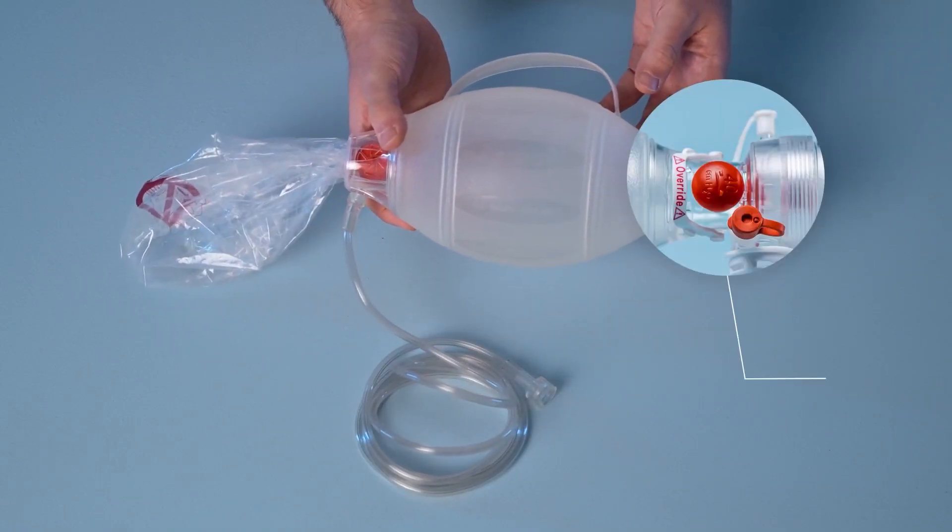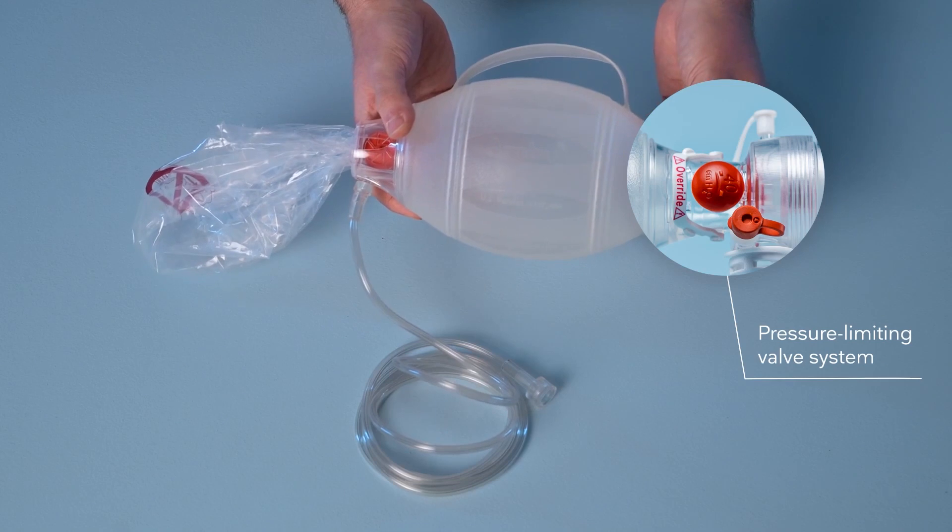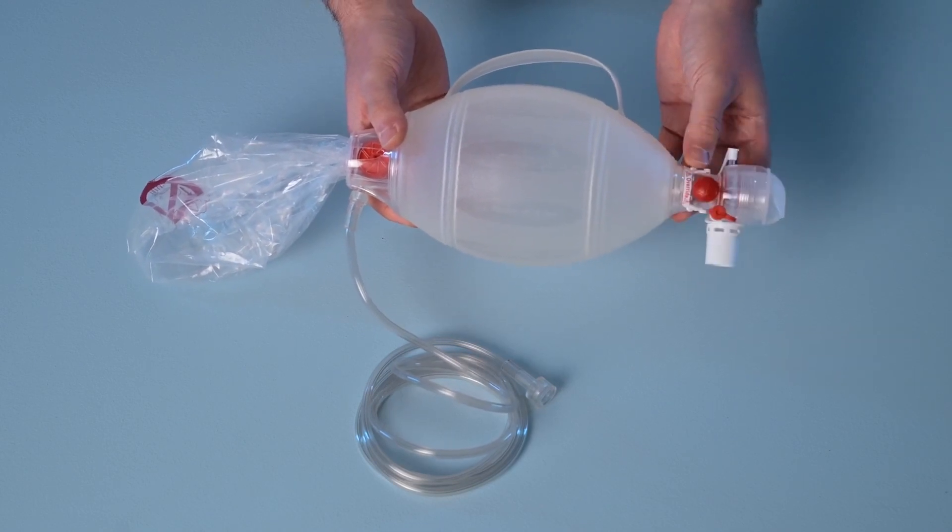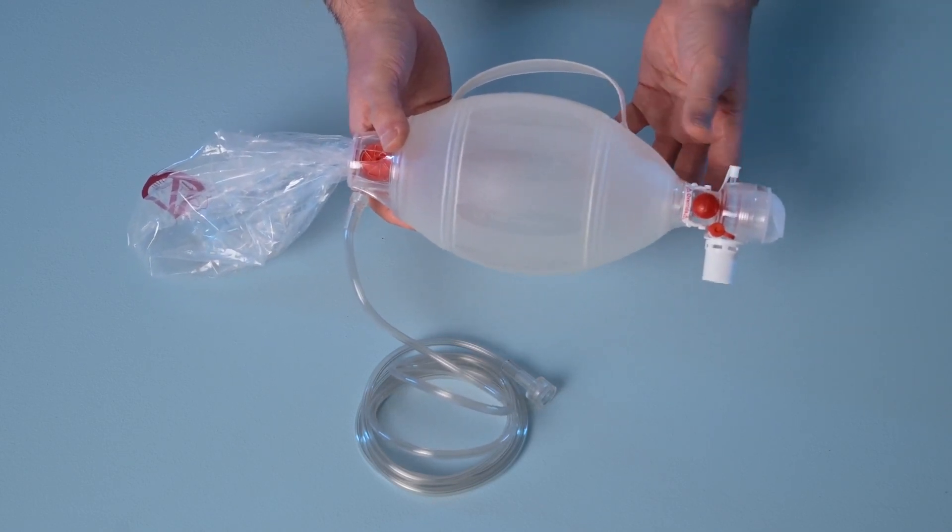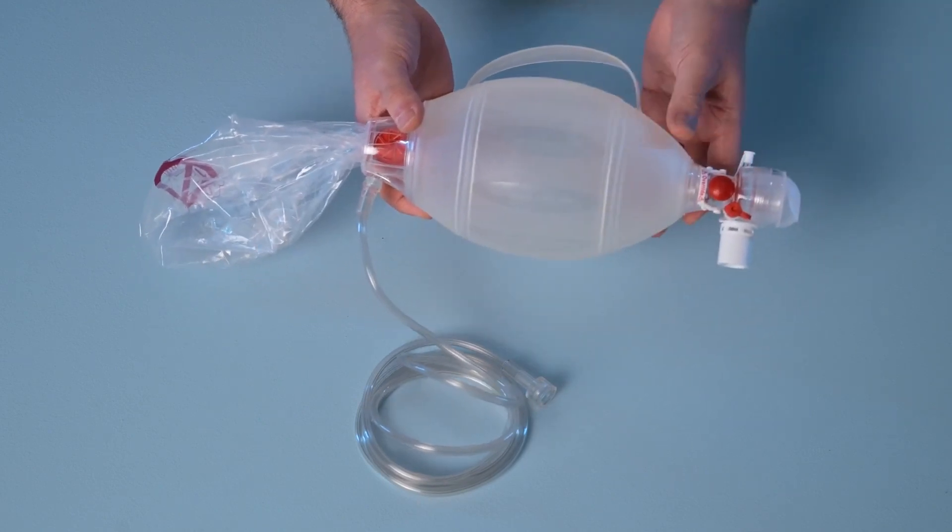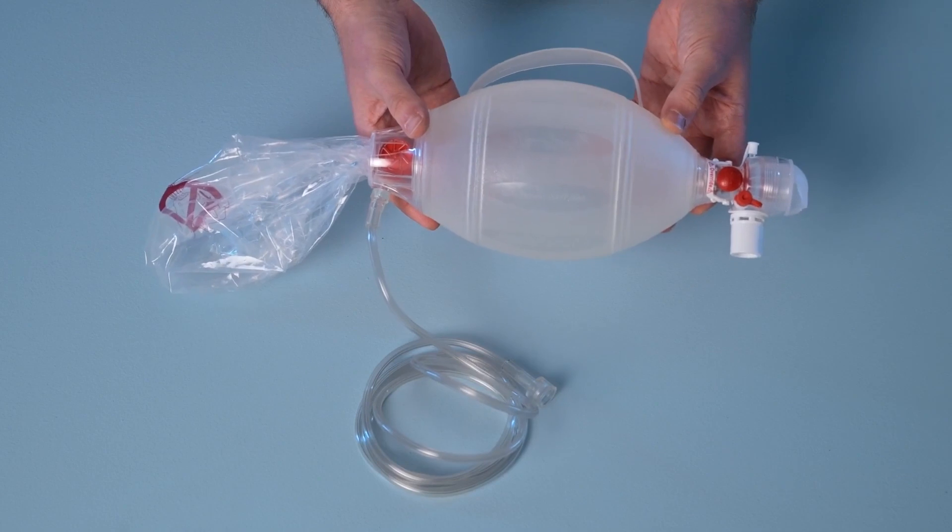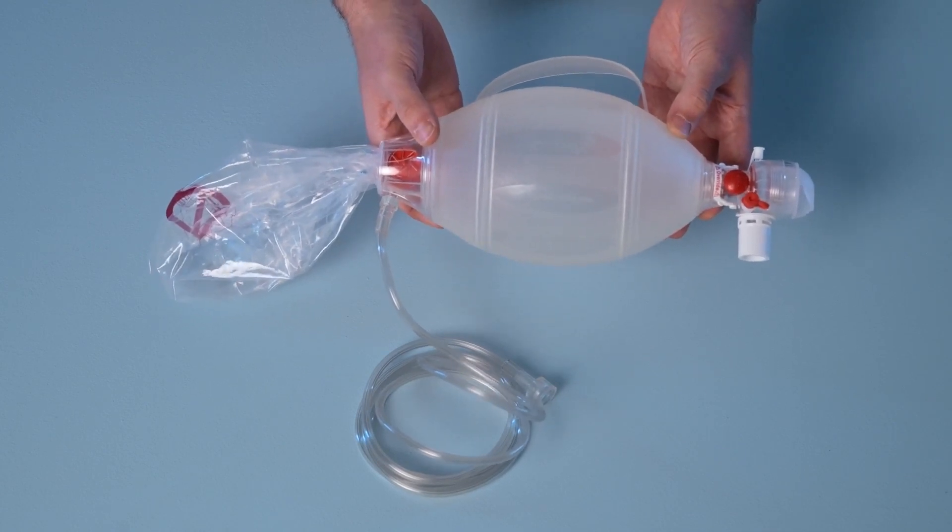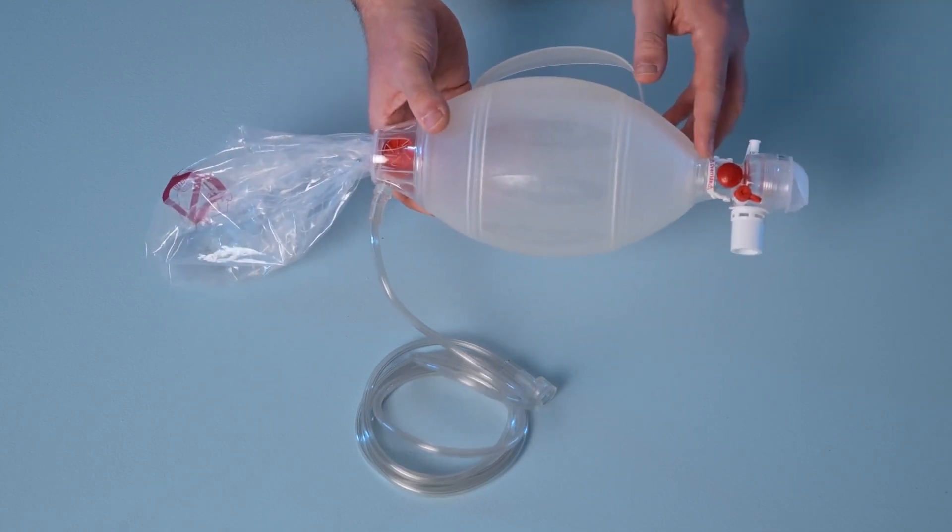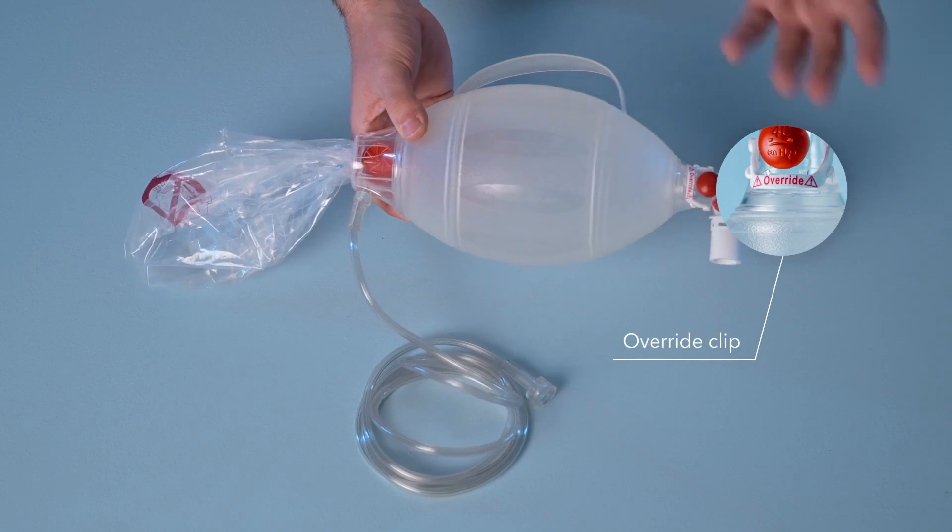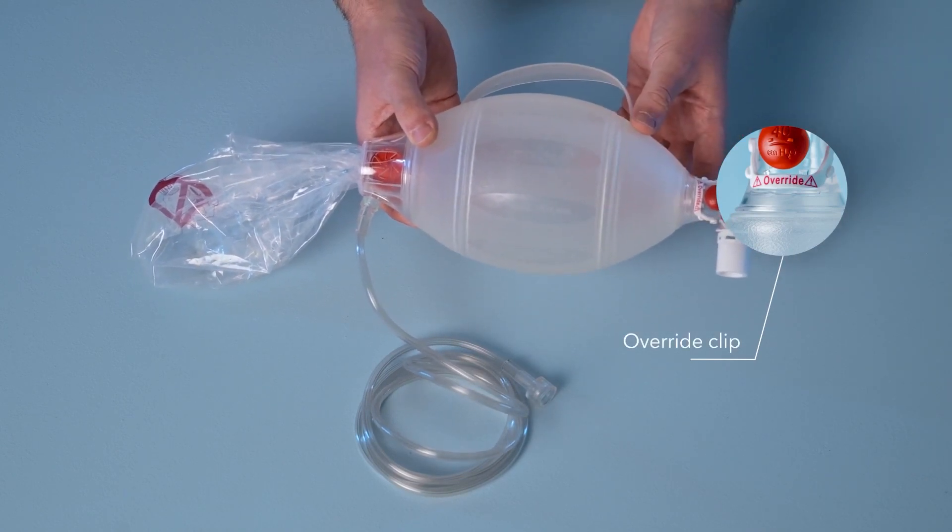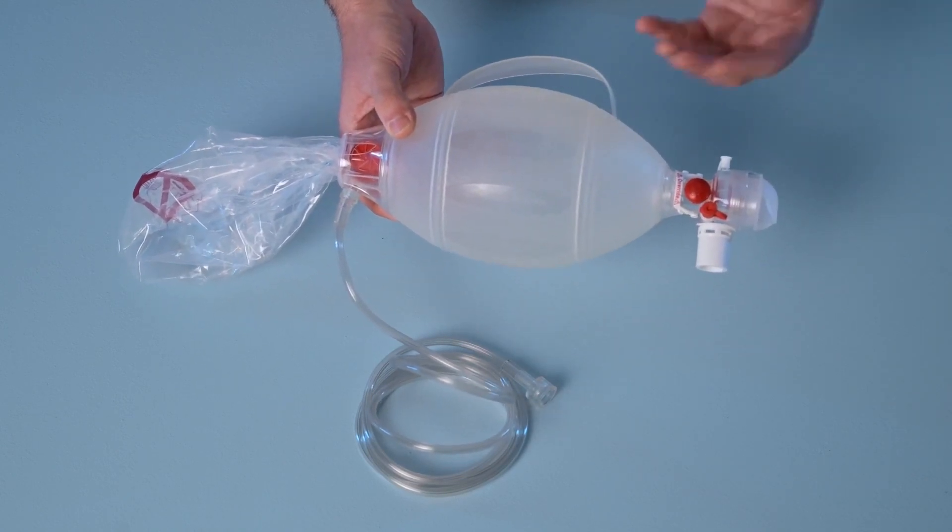Moving forward we have a pressure limiting valve system which prevents the delivery of excessive pressures to the patient. This feature is included on all Spur2 products and is designed to activate at a pressure of 40 centimeters of water. There's also an override clip which can be engaged if higher pressures are required. This clip prevents the valve from activating.